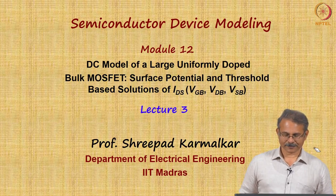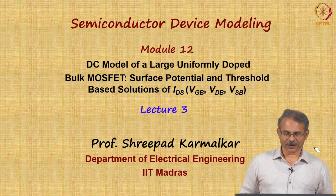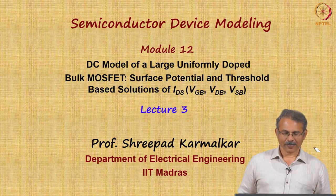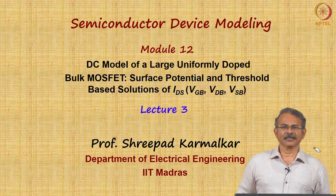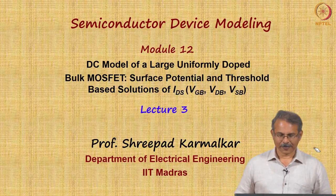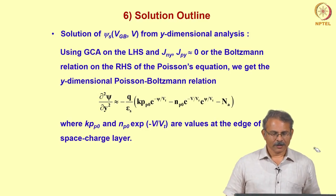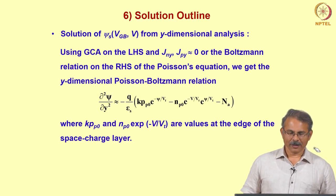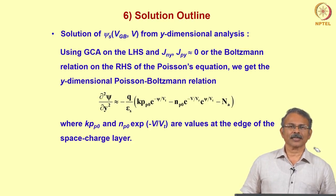Let us move on to the next lecture on surface potential and threshold based solutions of the drain current for a large uniformly doped bulk MOSFET under DC bias. A quick recap: what we were doing in the previous lecture is working out a solution for ψs as a function of gate to bulk voltage and channel voltage from y-dimensional analysis.